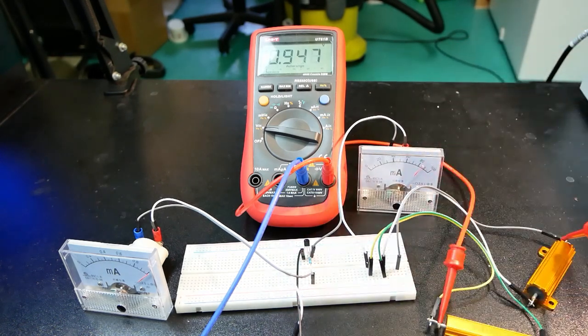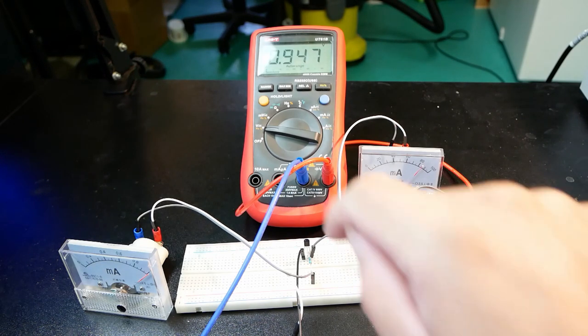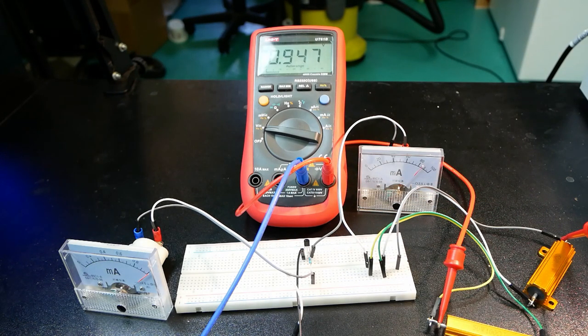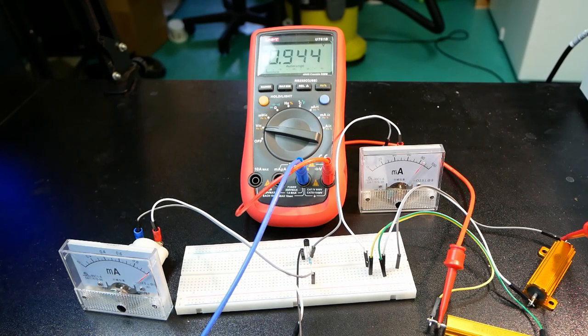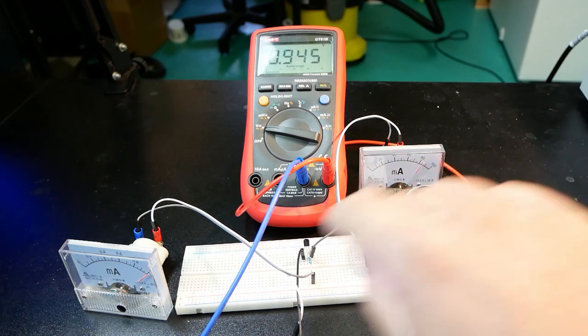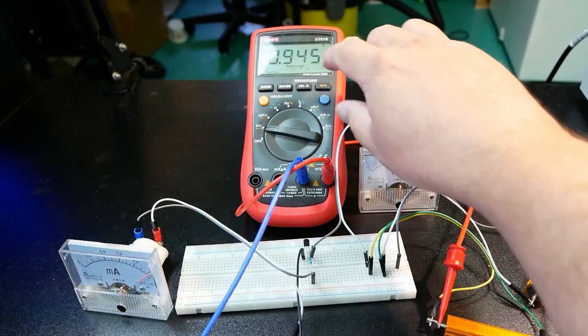And this, of course, is where the real transistor deviates from the theoretical transistor - a theoretical transistor would give you exactly the same current. In this case, due to various factors, your performance curve of the transistor, for example, and other inaccuracies, it will not do that.